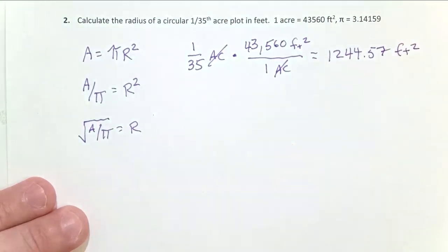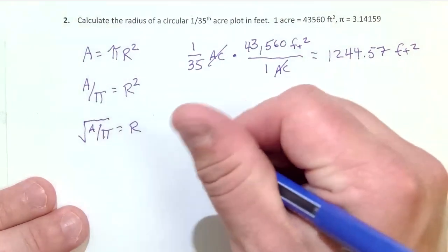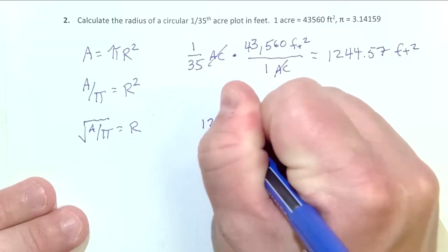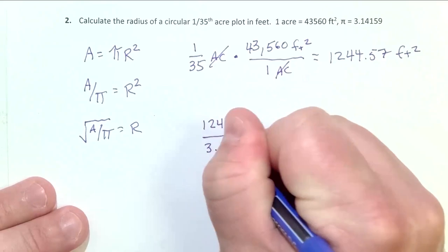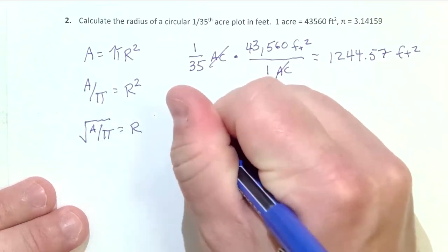So now I have an area, pi is a constant 3.14, and so I have everything I need to solve this problem. So I'm going to plug this number in here for area in this equation. And so what I end up with is 1,244.57 divided by pi, which is going to be 3.14159, et cetera, and take the square root of that.